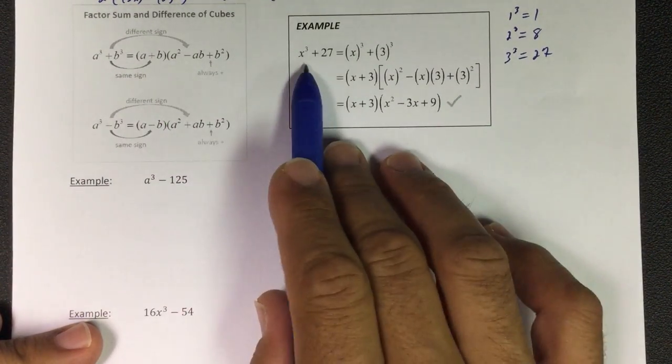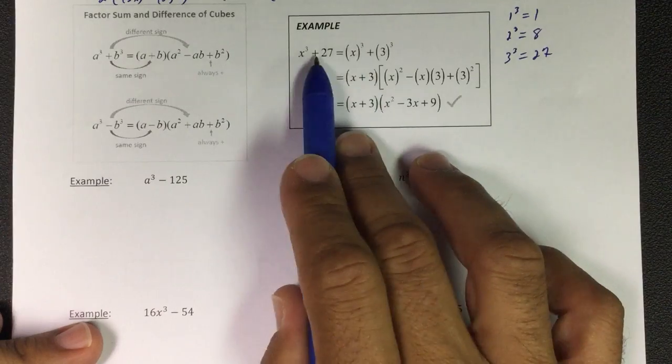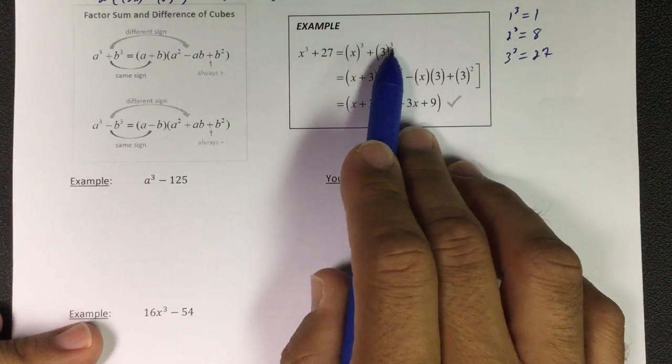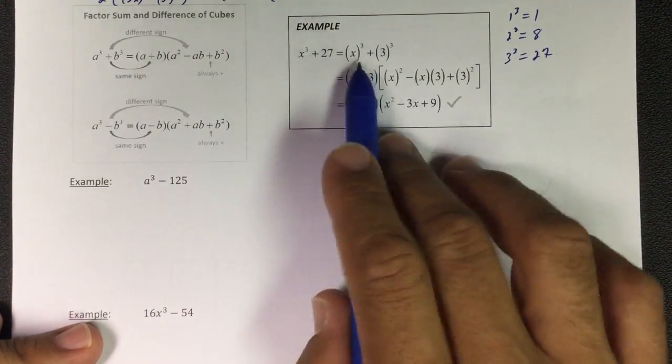27 is 3 cubed, so now I have my a and b.